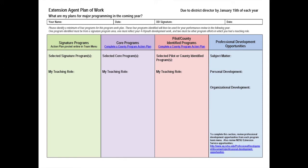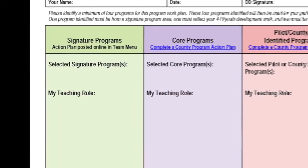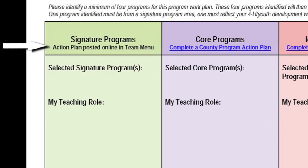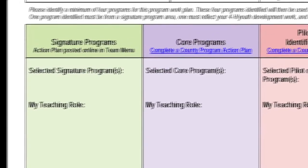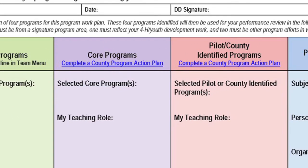Complete your plan of work, identify the teaching role you will have, and also list your professional development opportunities. If you are using a signature program, you can attach the action plan that is located online with that signature program in the team menu. If you are using a core or part of a pilot program, you will need to complete a county program action plan. The link to that is also on this page.